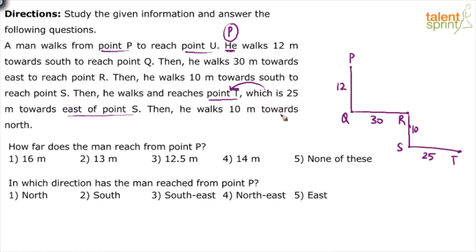And then he walks 10 meters towards north. From point T, he walks 10 meters towards north. And remember, at this point he stops and it has to be point U, because in the beginning itself he had mentioned that he has walked from point P to reach point U. So this is the trace of his path from point P to point U.